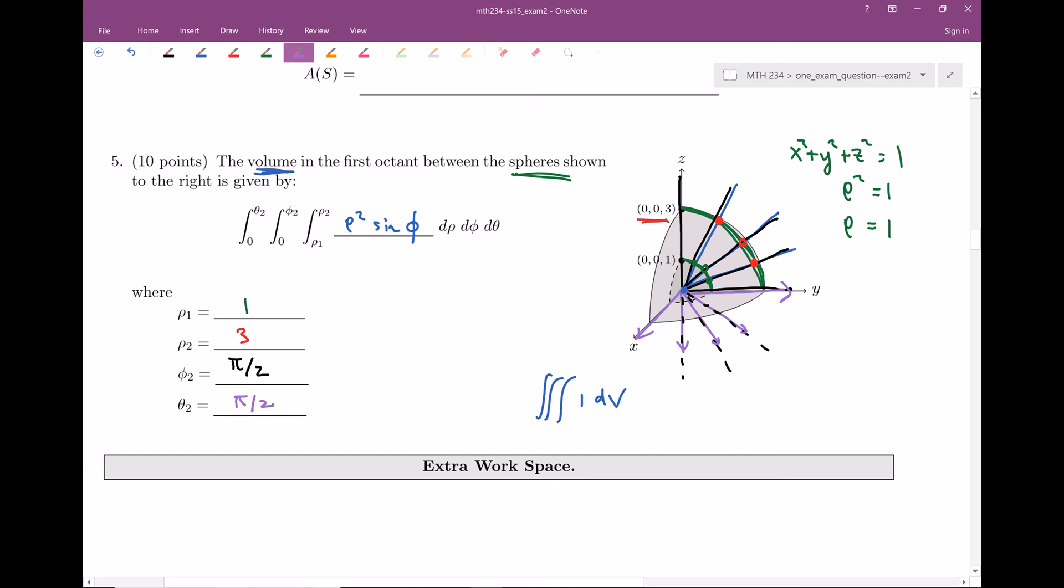And that right there is the final result. That is the spherical integration or the setup for finding the volume in the first octant between these spheres. Alright, so there you go. There's an example of a spherical integration problem 15.9 that we've seen on our previous exam. I hope you guys enjoyed, and that's it for chapter 15. Next up, we'll start venturing into chapter 16. I'll show you a few more examples and problems that have shown up on previous exams. I hope to see you then.